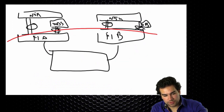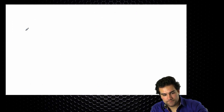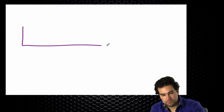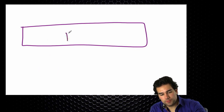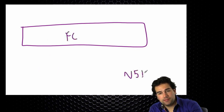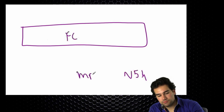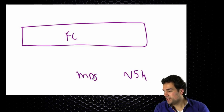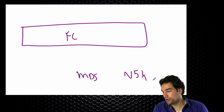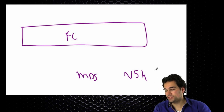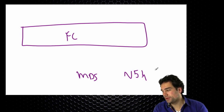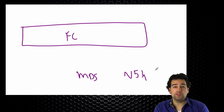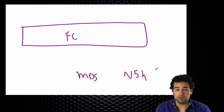In a fiber channel network, we have a fiber channel switch — either a Nexus 5K, an MDS switch, a Brocade, anything. These are not Cisco-specific port types. These are just port types available for everybody, for all the fiber channel vendors.